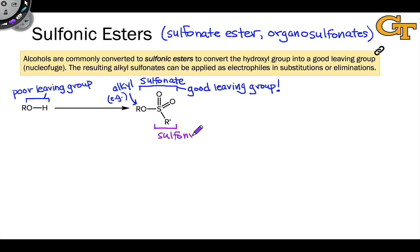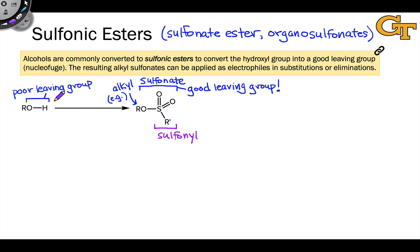The reason that's worth keeping in mind is because the reagent used to install a sulfonate is a sulfonyl-substituted reagent, so you'll see the sulfonyl nomenclature showing up in the reagents used to make this group. It's going to involve some group X connected to that sulfonyl group SO₂R'.